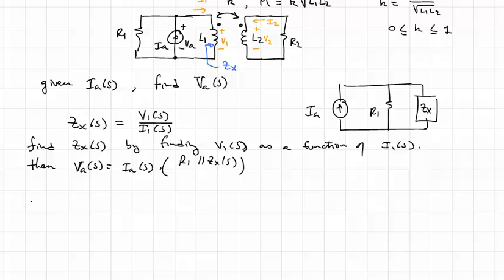So here we go. Let's find V1 as a function of I1. So when we go around this loop, we have I1 here, we have V1 here. What do we encounter? We encounter L1. And so first off, we can write V1 is equal to S L1 times I1.